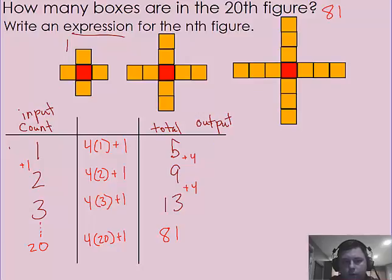Now, if I want to write an expression for the nth figure, well, just take this pattern. Instead of twenty, our input is now going to be n. So it will be four times n plus one. And that's our expression there. The expression is going to be four times n plus one. So 4n plus 1.